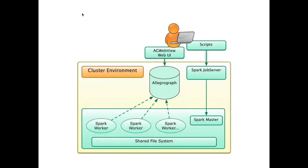First, let me show you the architecture of the system that we'll be using today. We have our Spark cluster, which in this example is a single server, although it can scale up to any number of servers. We have AllegroGraph in our cluster environment, and we have the Spark job server, which is an open source REST front end that allows interacting with a Spark cluster. We'll be using a set of scripts to run jobs within this cluster, and we'll be using the AllegroGraph WebView UI to look at the data on the AllegroGraph side.